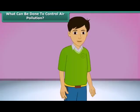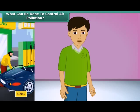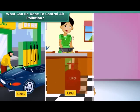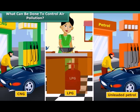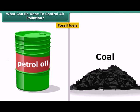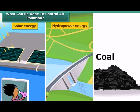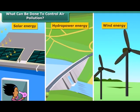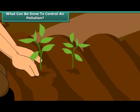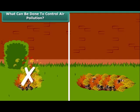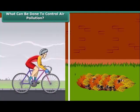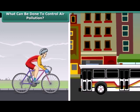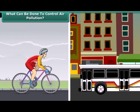What should we do to reduce air pollution? We can use clean fuels such as CNG, LPG, and unleaded petrol. Instead of fossil fuels, we can use solar energy, hydropower, and wind energy. We can also plant new trees. Rather than burning dry leaves, we can put them in a compost pit. We can walk more, switch over to bicycles for covering small distances, and use public conveyances.